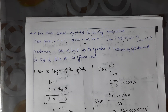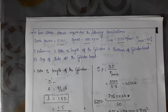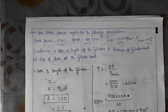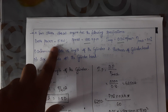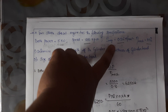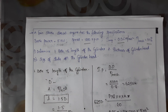Hello students, today we are going to see a problem on cylinders. A four-stroke diesel engine has the following specifications: brake power is 5 kilowatts, speed is 1200 RPM, indicated mean effective pressure is 0.35, and mechanical efficiency is 80%. We need to determine the bore and length of the cylinder, thickness of the cylinder head, and size of studs for the cylinder head.